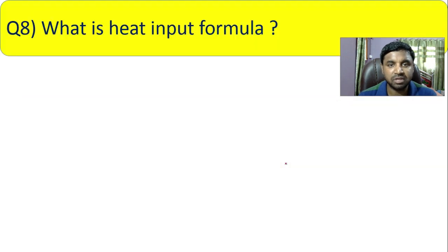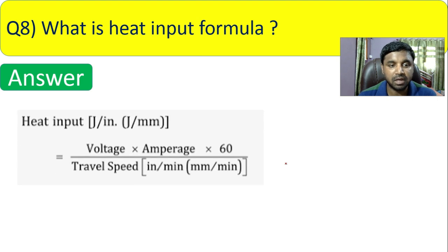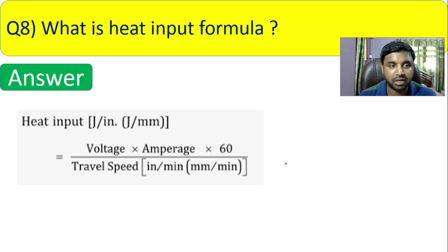Question 8: what is the heat input formula? Heat input is expressed in joules per inch or joules per mm. The formula is: Heat Input = (Voltage × Amperage × 60) ÷ Travel Speed, where travel speed is in mm per minute or inches per minute. You need to know three values: voltage, amperage, and travel speed to calculate heat input.